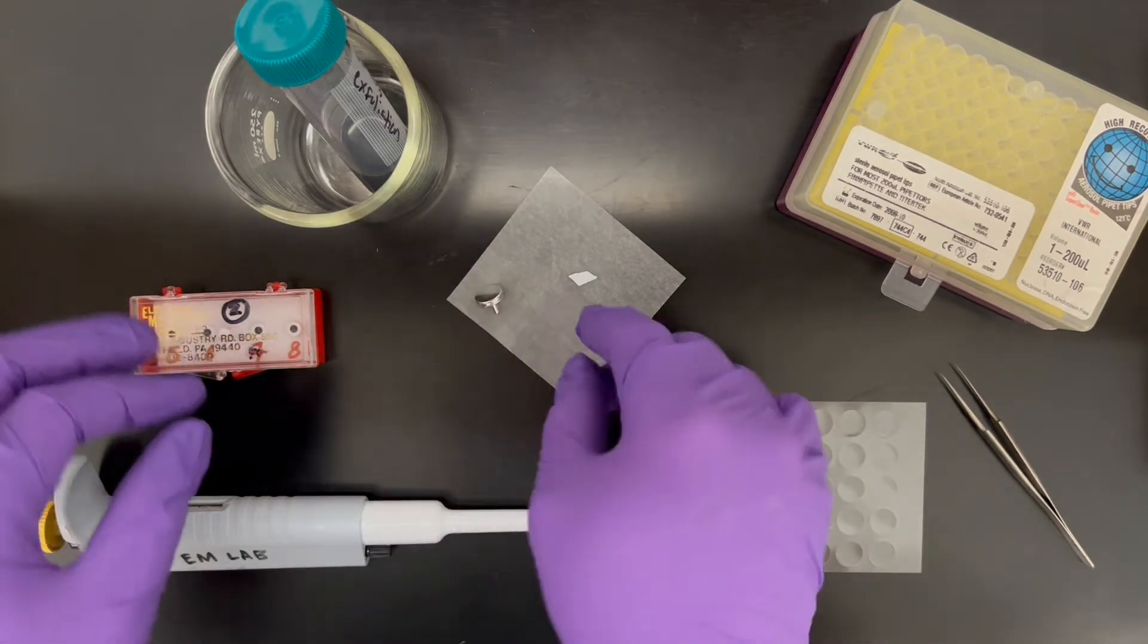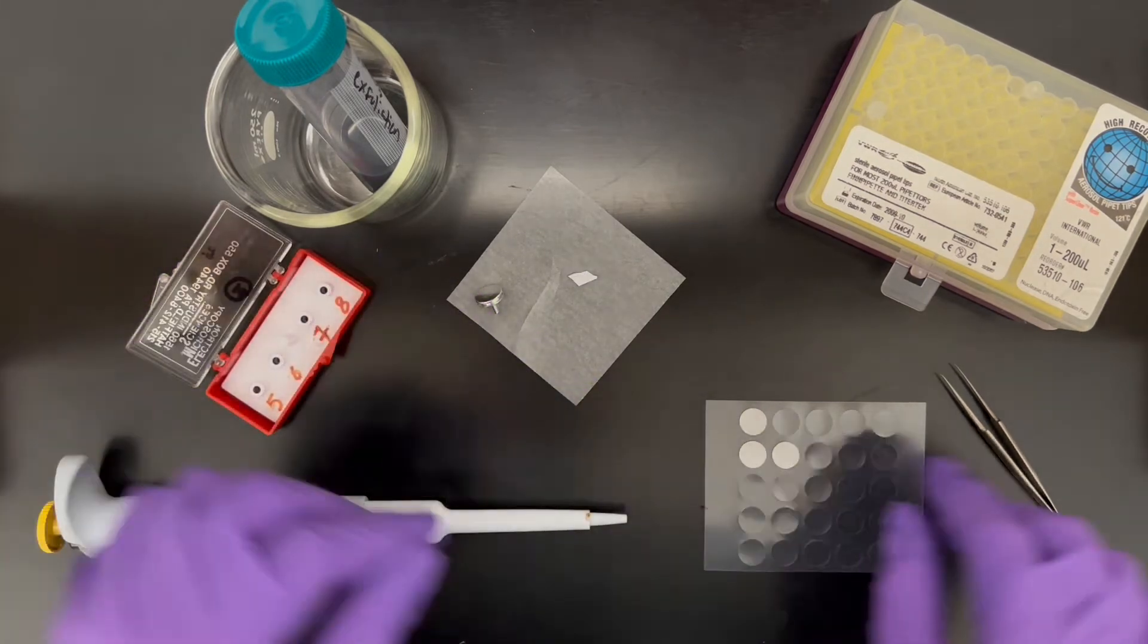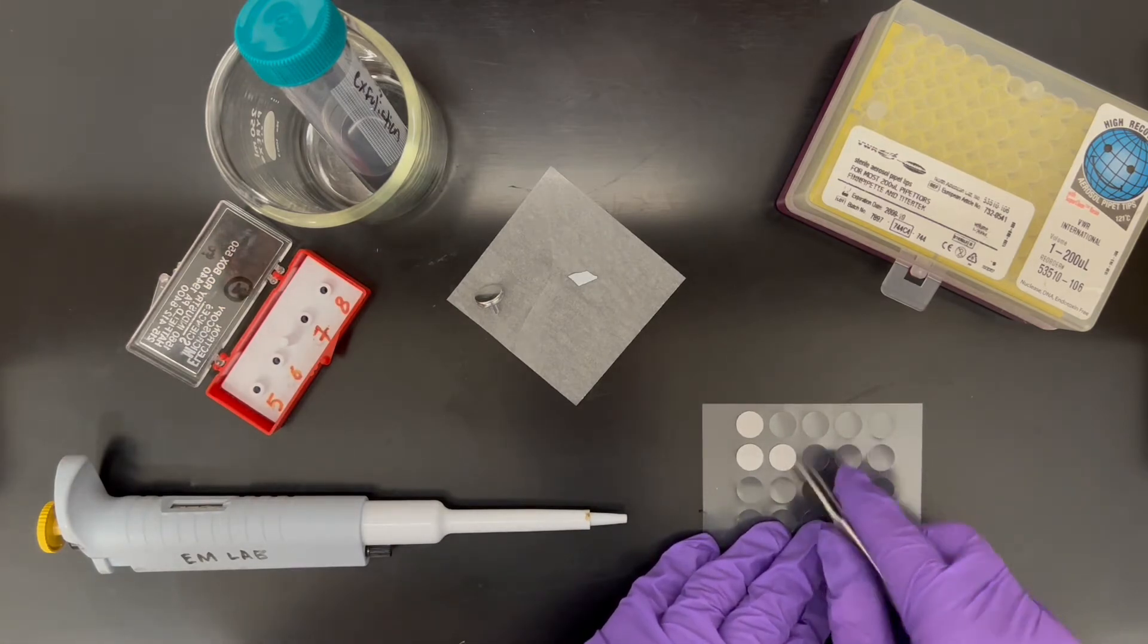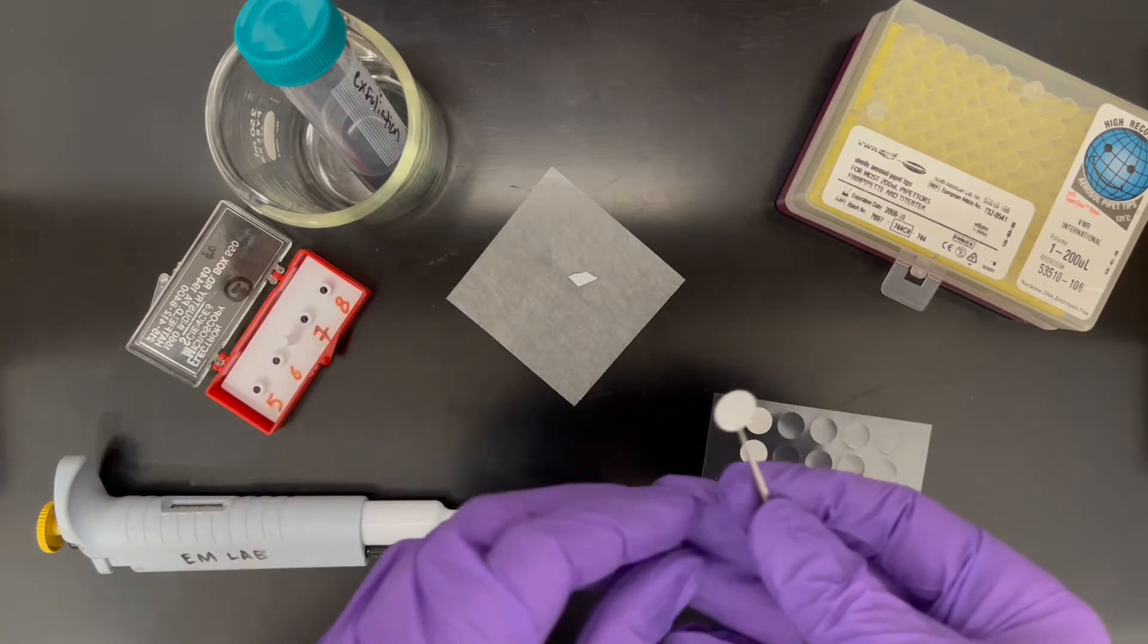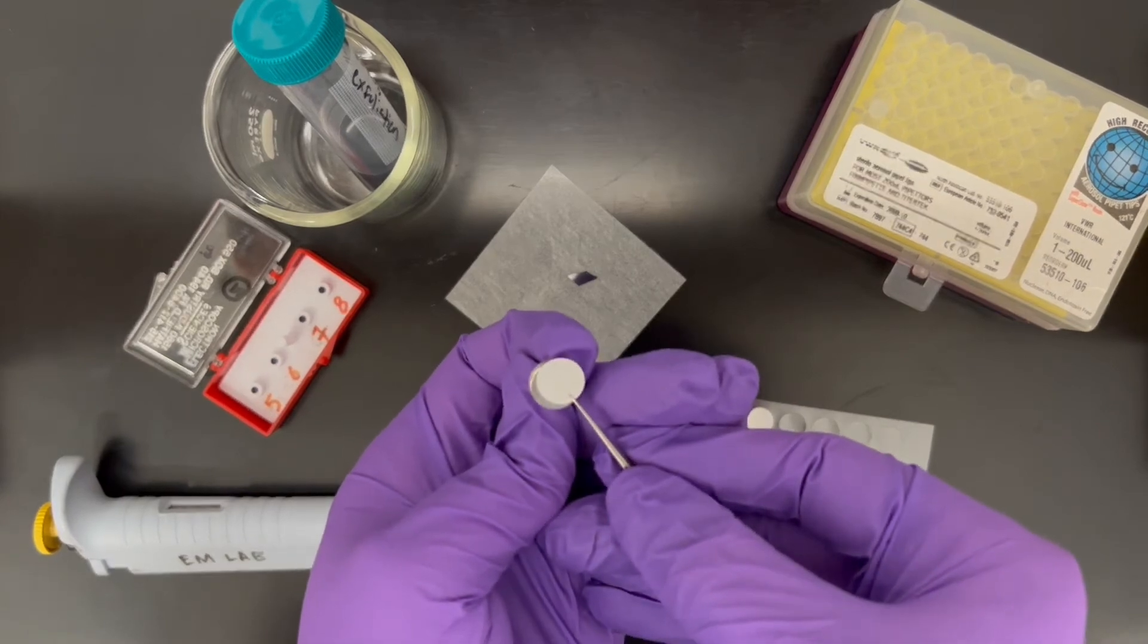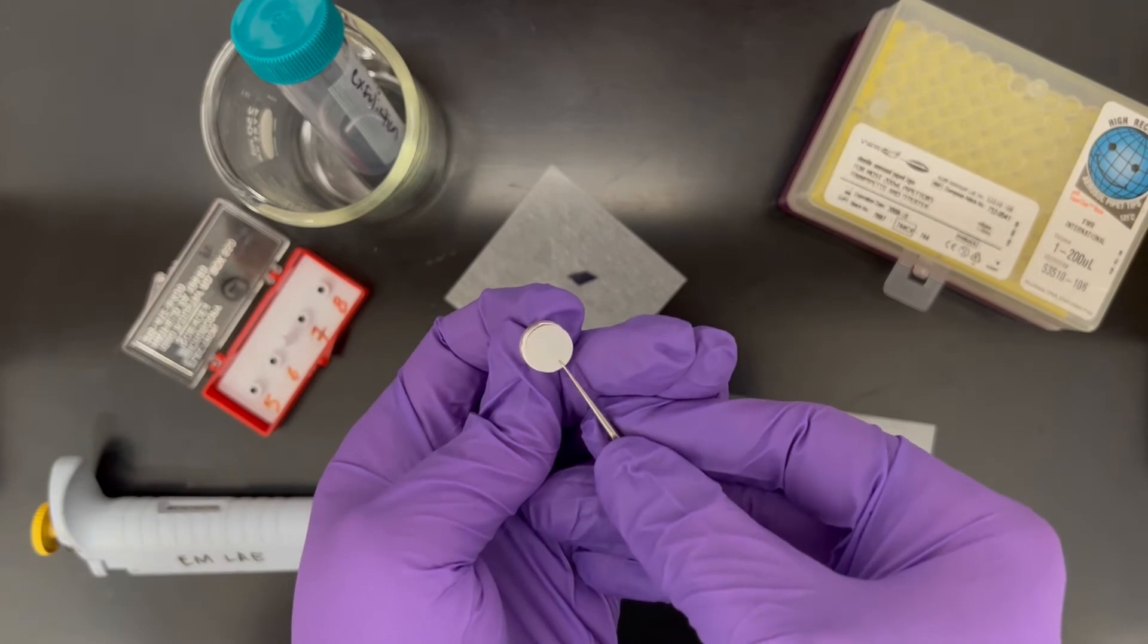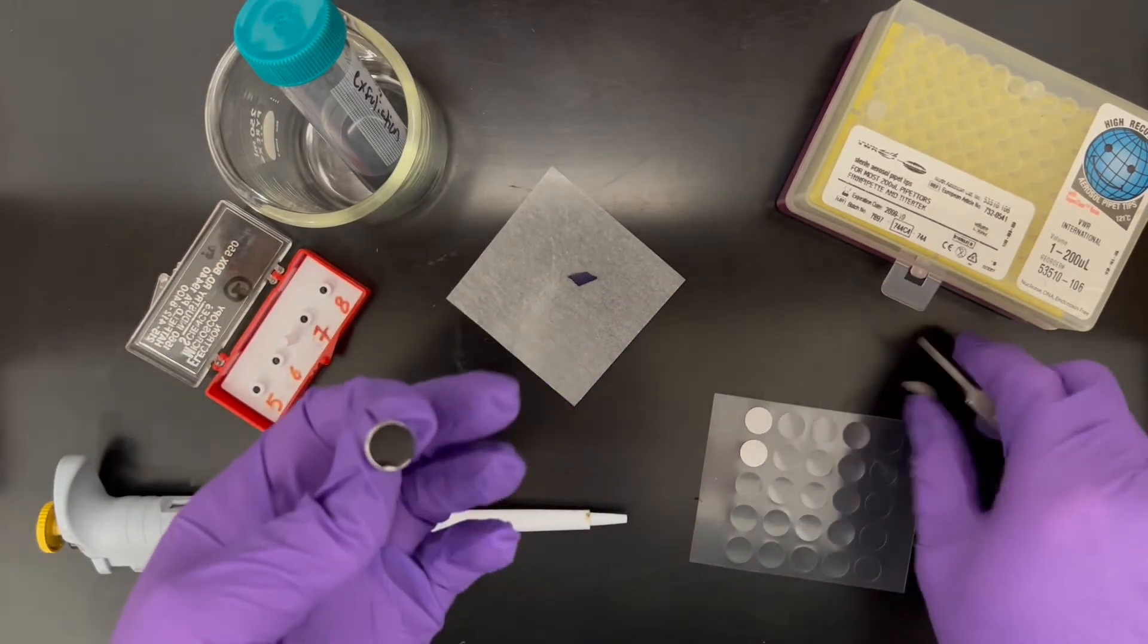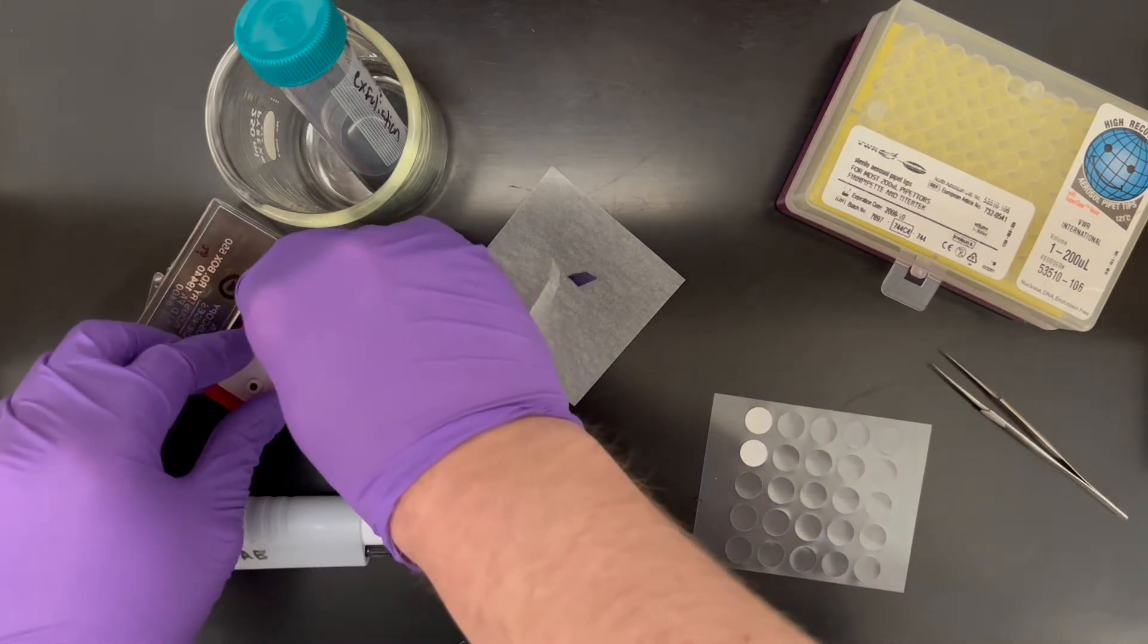In the time that that is settling, we're going to open our specimen box, get our carbon sticky tab, apply it to the stub, and put it in the box.